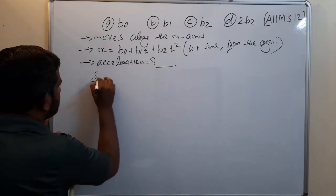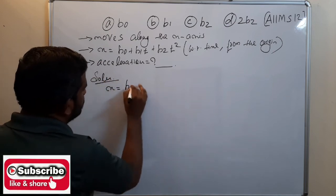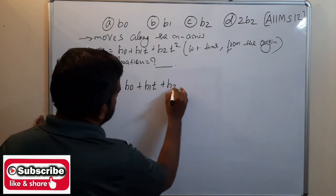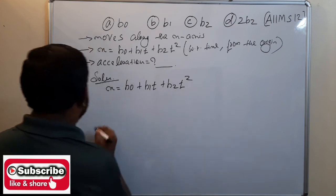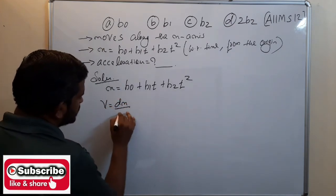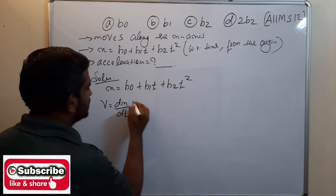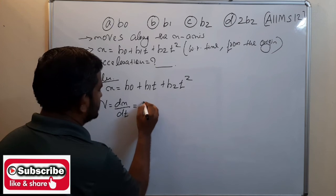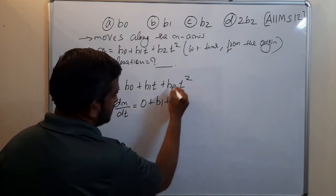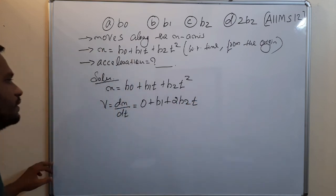Solution: given x equals b0 plus b1 t plus b2 t square. Velocity is equal to dx by dt, rate of change of displacement. That's equal to constant differentiation 0 plus b1 plus 2 b2 t.